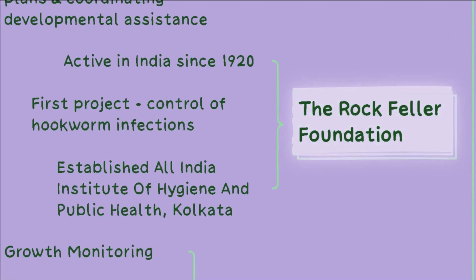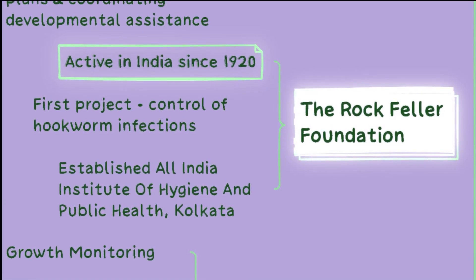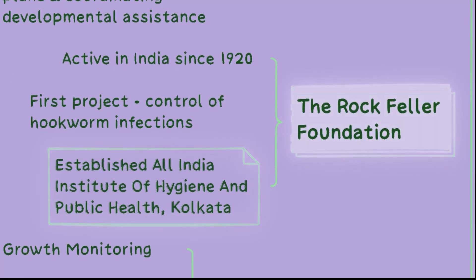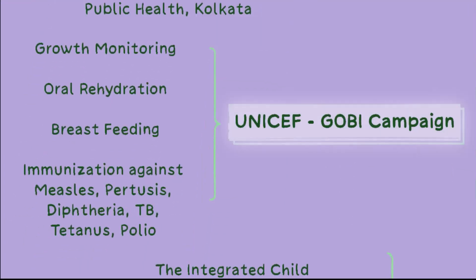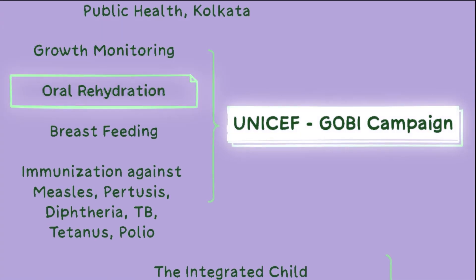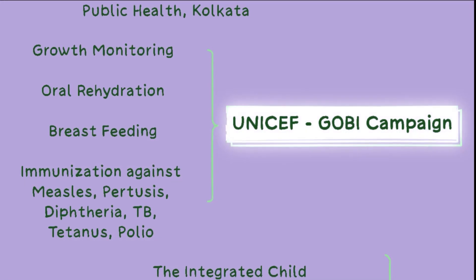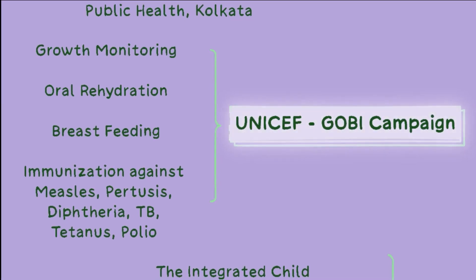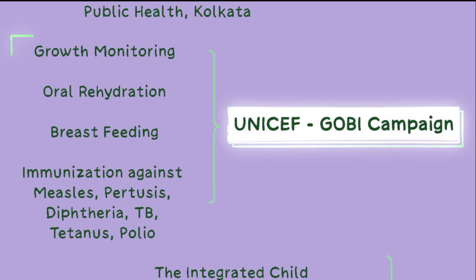The Rockefeller Foundation has been actively involved in various projects in India since 1920, addressing health issues like hookworm infections and contributing to the establishment of the All India Institute of Hygiene and Public Health in Kolkata. The UNICEF GOBI campaign — Growth Monitoring, Oral Rehydration, Breastfeeding, and Immunization — was a comprehensive child health program implemented by UNICEF in the 1980s, aimed at improving child survival and wellbeing in developing countries through integrated interventions.